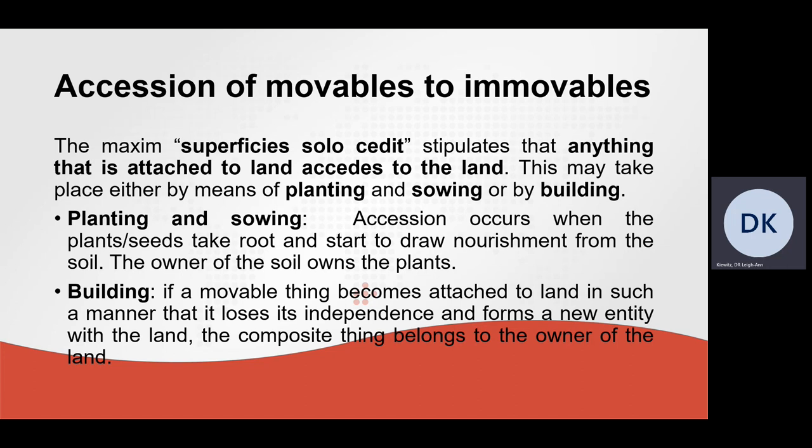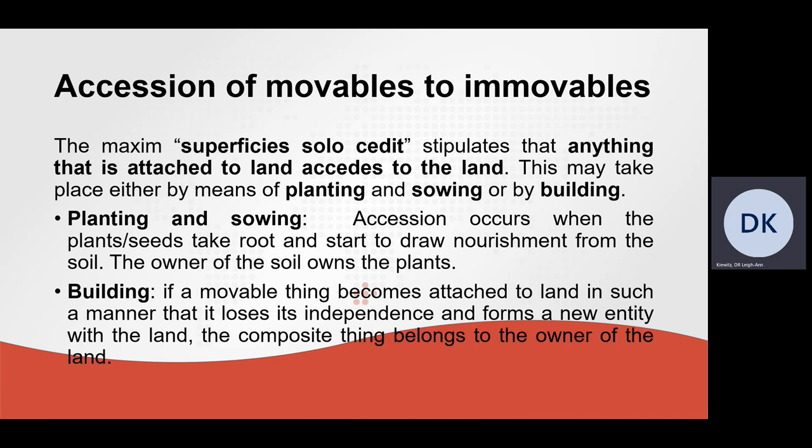Accession of movables to immovables is governed by the maxim superficies solo cedit, which stipulates that anything attached to the land accedes to the land. This may take place either by means of planting and sowing or by building. In the case of planting and sowing, accession occurs when the plants or seeds take root and start to draw nourishment, and the owner of the soil becomes the owner of the plants. In the case of building, if a movable thing becomes attached to land in such a manner that it loses its independence and forms a new entity with the land, the composite thing belongs to the owner of the land.